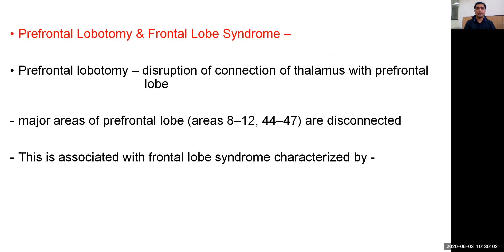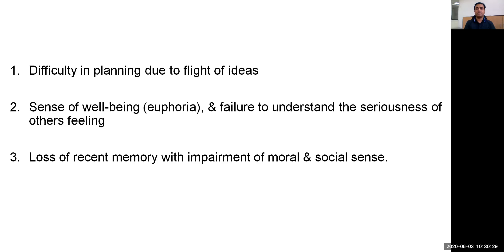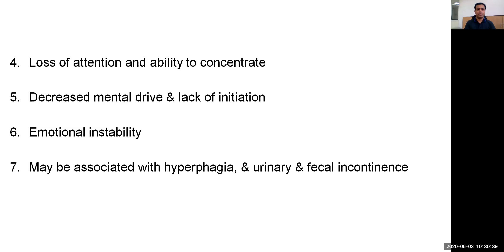Prefrontal lobotomy refers to disruption of connections of the thalamus with the prefrontal lobe; major areas involved are areas 8 to 12 and 44 to 47. It is associated with frontal lobe syndrome, characterized by difficulty in planning due to flight of ideas, euphoria, and failure to understand the seriousness of situations. There is also loss of recent memory with impairment of social sense, loss of attention and ability to concentrate, decreased mental drive, emotional instability, and may be associated with hyperphagia and urinary and fecal incontinence.